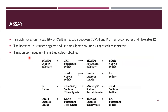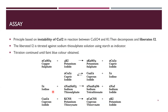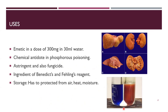The assay of copper sulfate is based on the instability of CuI2. Because of this instability, the assay is achieved. What you get is cuprous iodide and iodine. Iodine on reaction with sodium thiosulfate gives sodium tetrathionate and sodium iodide. Cuprous iodide on reaction with potassium thiosulfate gives cuprous thiosulfate and potassium iodide.